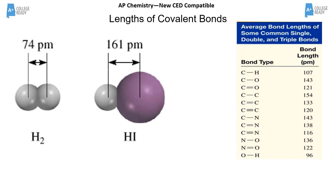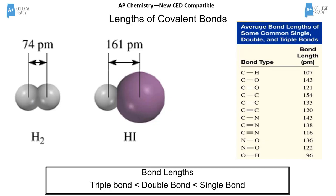Just like in unit one, the length of a covalent bond has everything to do with periodic trends. Hydrogen has a much smaller covalent bond because the atoms are smaller; HI is considerably bigger largely because iodine is a huge atom compared to hydrogen. The general rule — with a few exceptions — is that a triple bond is shorter than a double bond, which is shorter than a single bond.